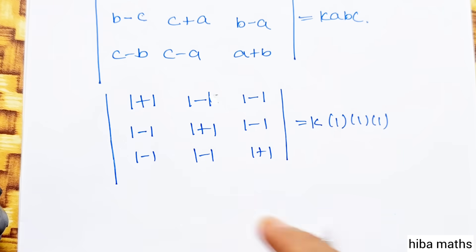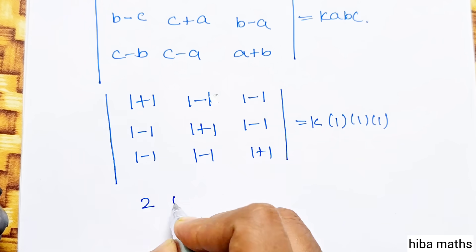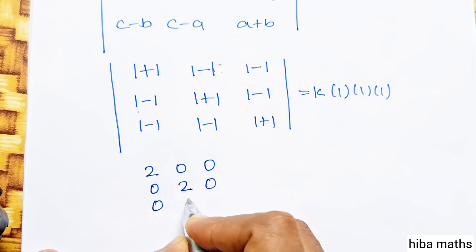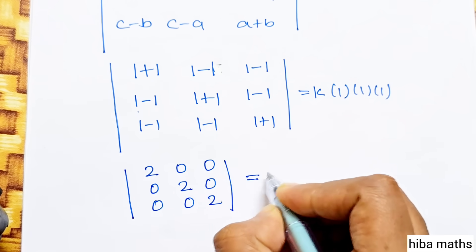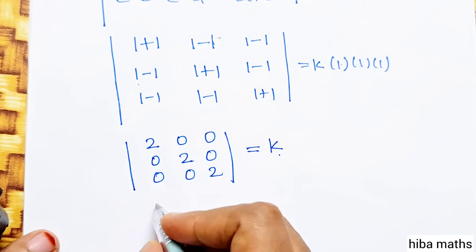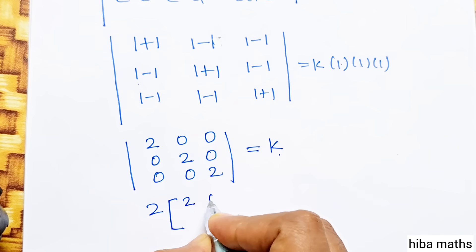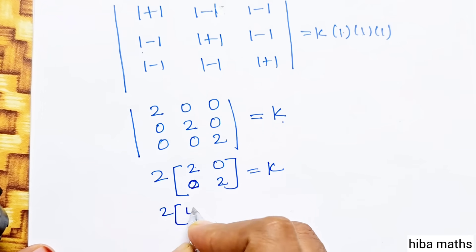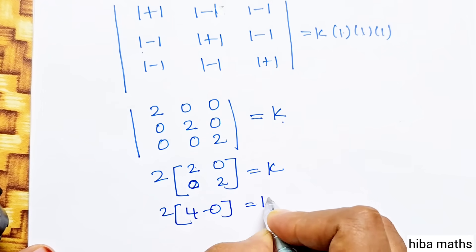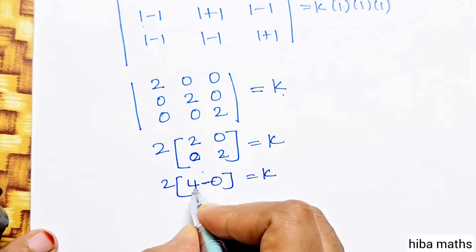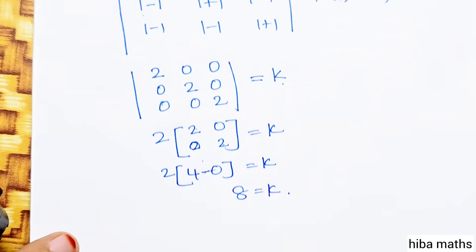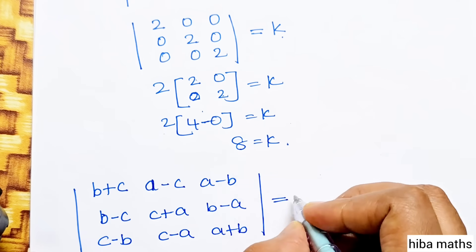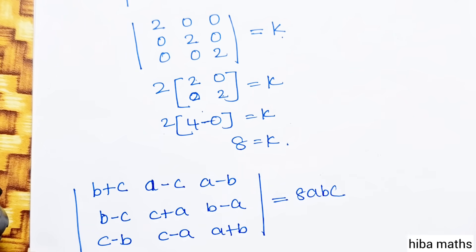Expanding the diagonal: 2 times 2 times 2. The matrix is diagonal with 2, 0, 0 / 0, 2, 0 / 0, 0, 2. Expanding gives 2 into 2 into 2 equals 8. So 2 times 4 minus 0 equals 8, which equals k. Therefore k equals 8. Substituting back, the determinant equals 8 times A times B times C. This is the proof we were asked to show.